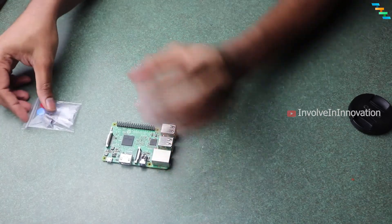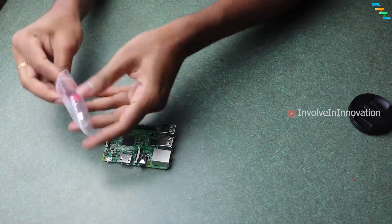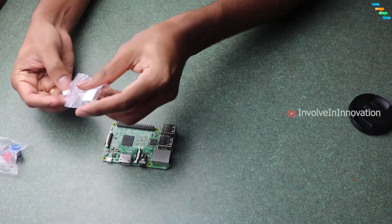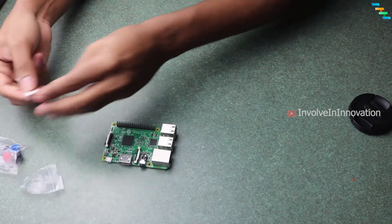The Heatsink comes with a special thermal sticker. We need to just peel the sticker and stick it to the chip. Bigger Heatsink for processor and smaller Heatsink for network chip.